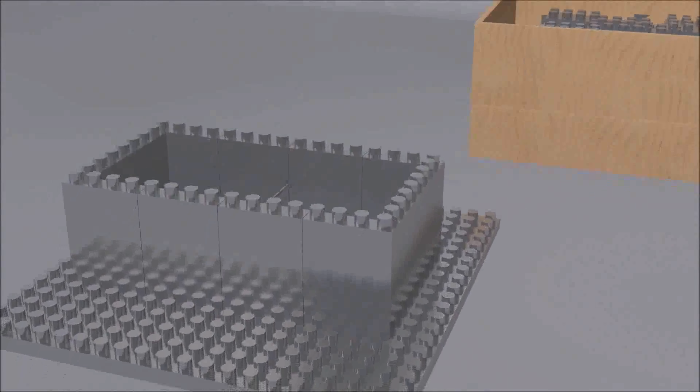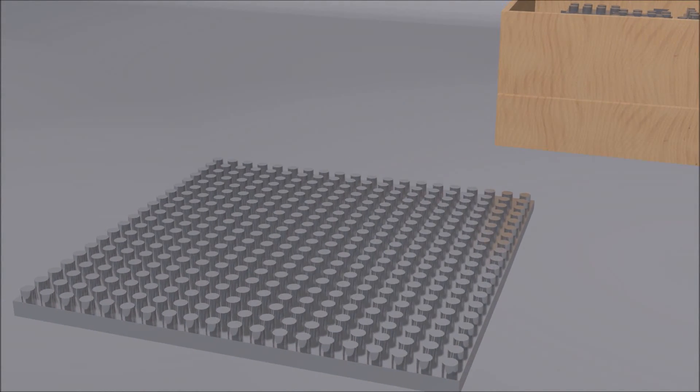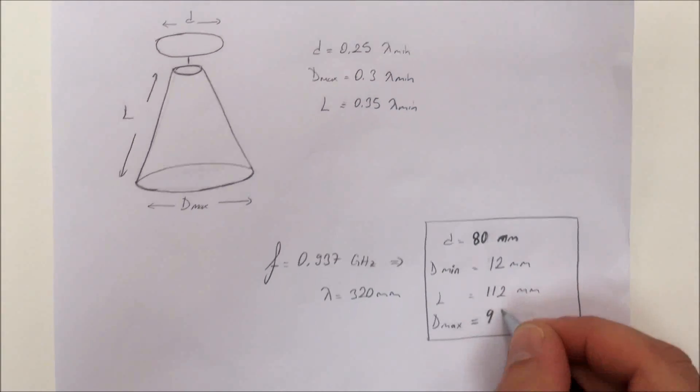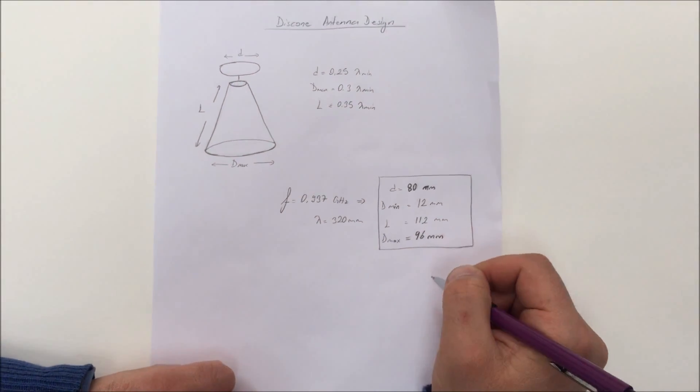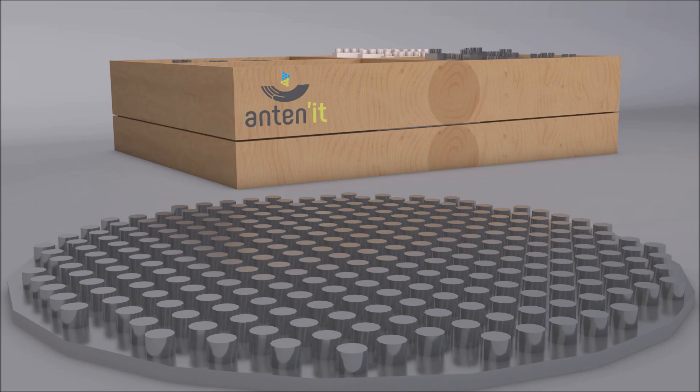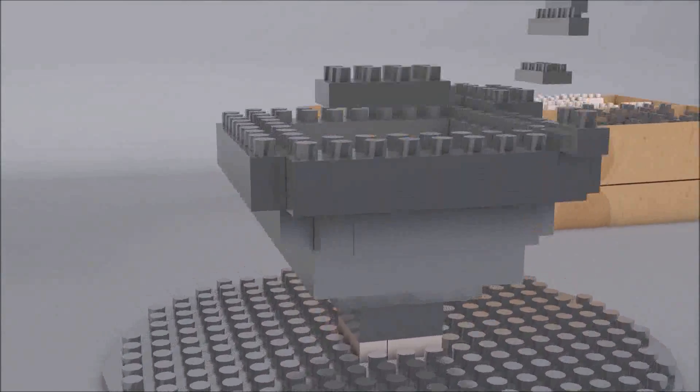Let's build a disk cone antenna. First, calculate the initial dimensions via analytical calculations or antenna design software. Then you can build the antenna.